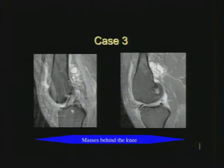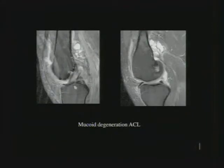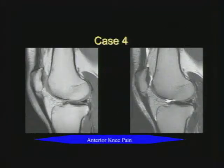We don't know why people get mucoid degeneration — I've seen it in young people. Some theories suggest partial tears; others believe it's degeneration. I think it can be both. If you just see a mass in the ACL, it's probably a ganglion. We differentiate that from mucinous degeneration by the mass, but they are very similar.